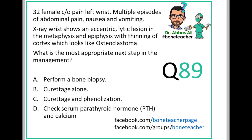This MCQ presents a 32-year-old female who complains of pain in the left wrist, multiple episodes of abdominal pain, nausea and vomiting. X-ray of the wrist shows an eccentric lytic lesion in the metaphysis and epiphysis with thinning of the cortex, which looks like osteoclastoma. The question asks: what is the most appropriate next step in management?